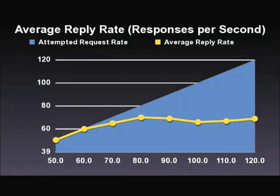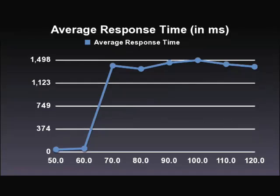Here's our first graph, which is average reply rate. In blue along the bottom, you can see the average requests per second — we started at 50 and incremented by 10: 60, 70, 80. In yellow, you can see the average responses per second. It was able to keep up at 50 and 60 requests per second, but as soon as we got to 70, 80, 90, and 100...